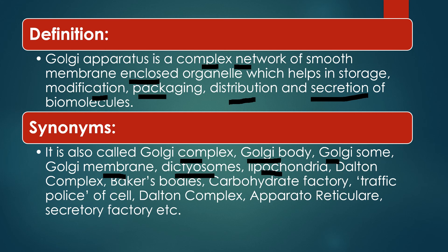It can also be called lipochondria and Dalton complex. It is called Dalton complex because the detailed structure of Golgi apparatus was explained by Dalton. It is also called Baker's bodies, Carbohydrate factory, Traffic Police — because it guides substances in the cell to their destination — Appretto reticular, and lastly Secretory factory, because its main function is to secrete various types of substances.